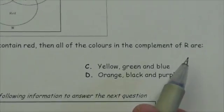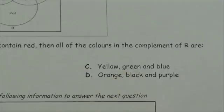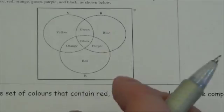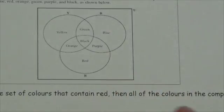So R is the set that contains red. Now they've done a nice thing and labeled this circle R here. So the complement is going to be everything outside of that.